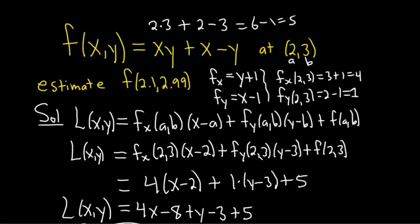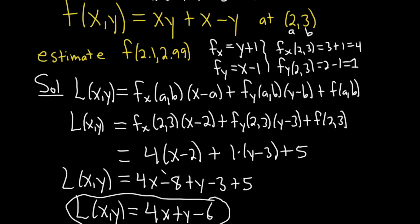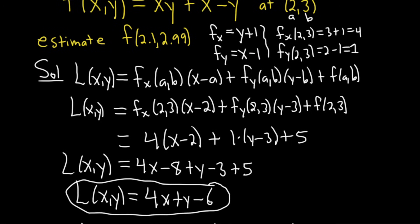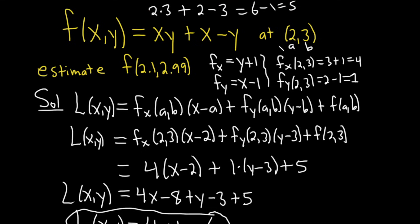To recap quickly: all you do is use this formula, plug everything in, and then you have your linear approximation function which you can use to estimate values close to (2,3). Since 2.1 and 2.99 are both really close to 2 and 3, the approximation works well whenever you're close to that point. I hope this video has been helpful. Good luck.